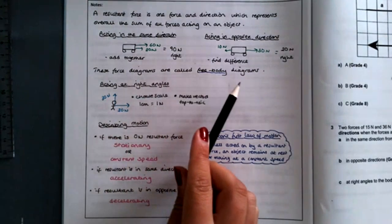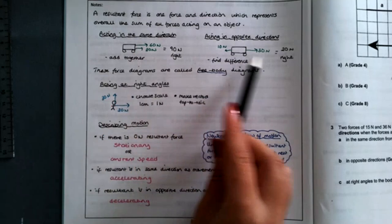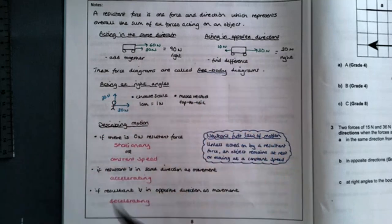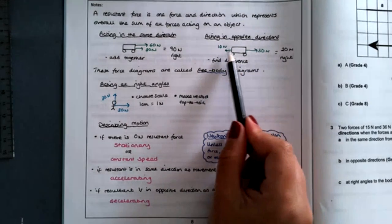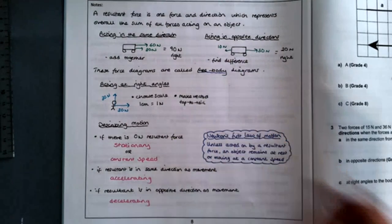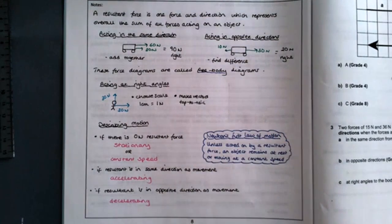These force diagrams are called free body diagrams. Any object with arrows coming off it, pointing in the direction of the forces that are acting and at the correct length depending on the size of the force—that whole diagram is a free body diagram.